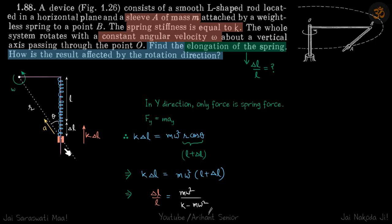So let's write our equation: k delta l equals m a cos theta. So a is omega square r. Now you can see r cos theta is l plus delta l, so we replace that and this will be our new equation. And if we divide l everywhere, we can find the value of delta l by l which will be m omega square by k minus m omega square.